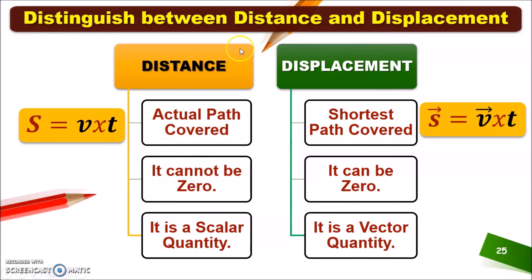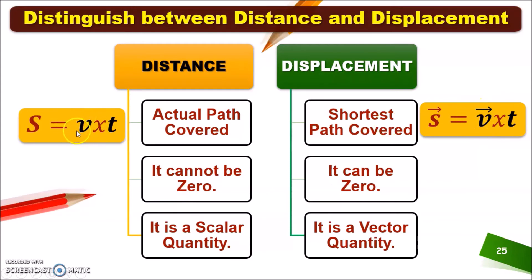These are the formulas: distance is equal to speed multiplied by time, and displacement is equal to velocity multiplied by time. This is the symbol of velocity and this is the symbol of speed.